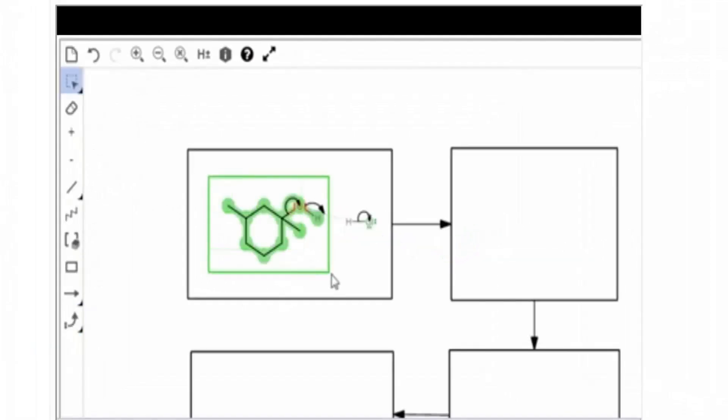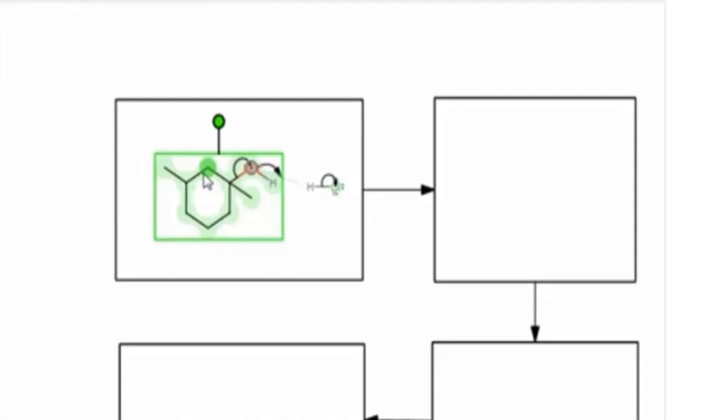Drag a box to highlight the structure that should be copied into the next step. Use keyboard shortcuts to copy the structure. Use keyboard shortcuts to paste the structure. The structure remains highlighted and can be dragged to the correct step.